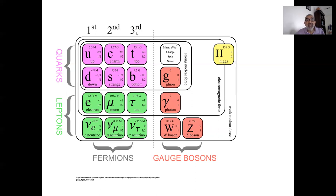There is yet a third generation of quarks, known as the top quark and the bottom quark, which are just like the up, down, charm, and strange quarks but heavier still. And a third generation of leptons — just like the electron and the muon — known as the tau, but heavier than these two. The tau has its own version of the neutrino known as the tau neutrino.